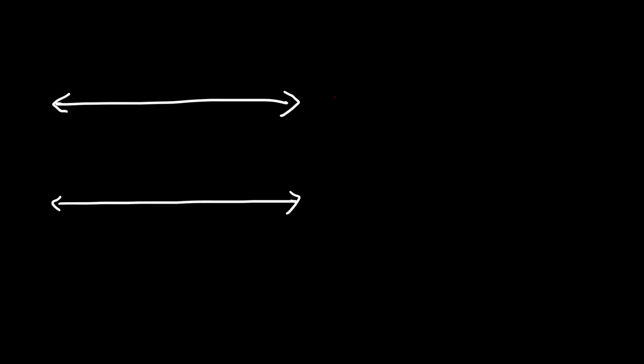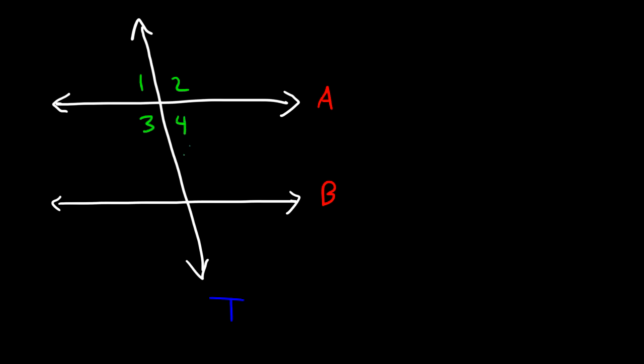In this lesson we're going to focus on proving parallel lines. Let's say we have two lines — call this line A and line B — and these two lines are cut by a transversal line, which we'll call T for transversal. Let's label the angles 1, 2, 3, 4, 5, 6, 7, and 8.